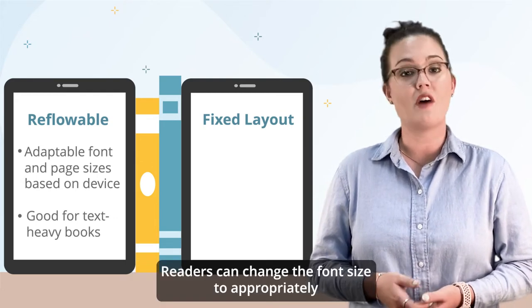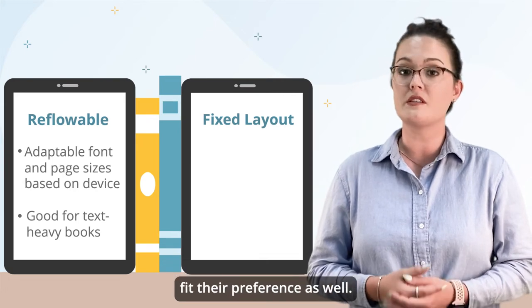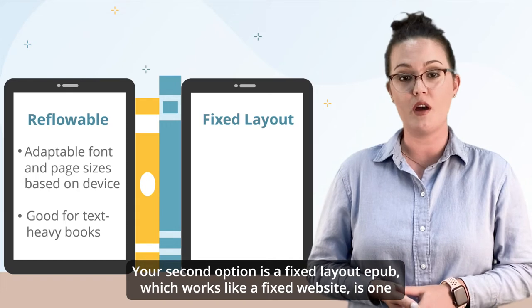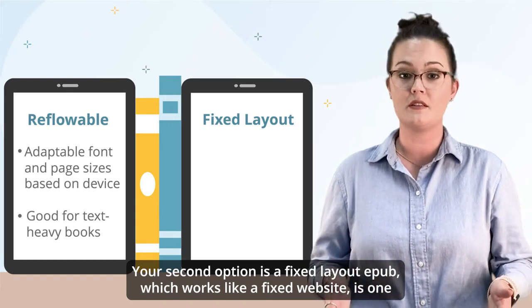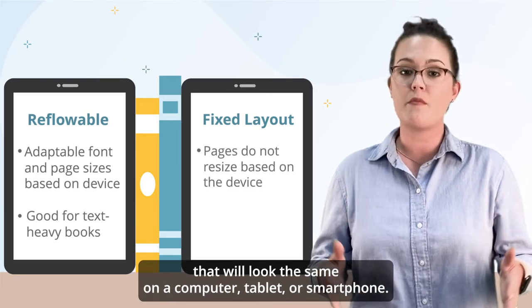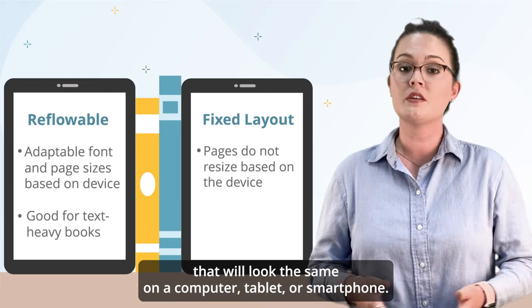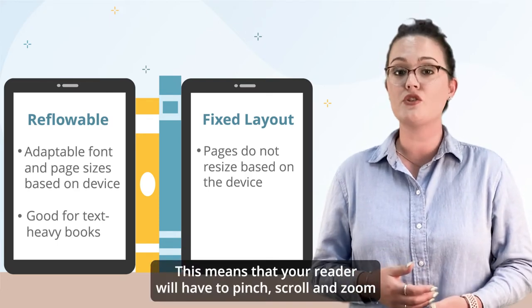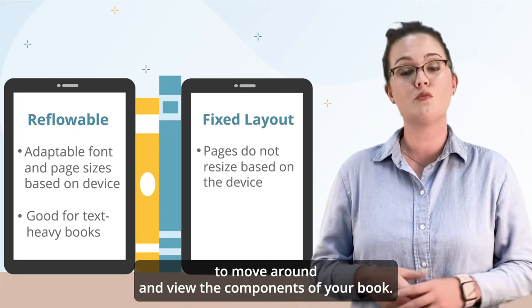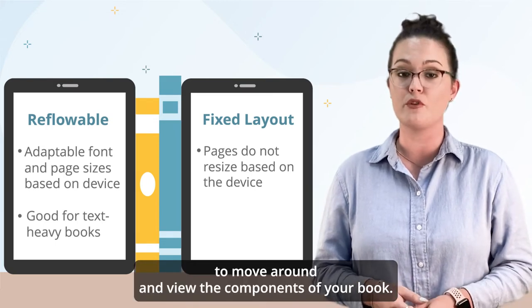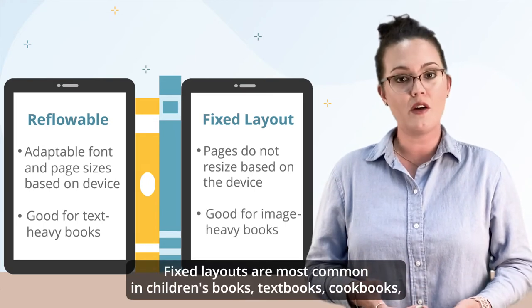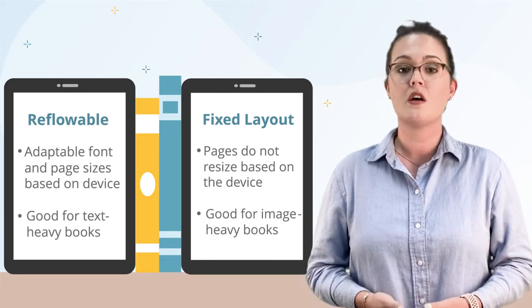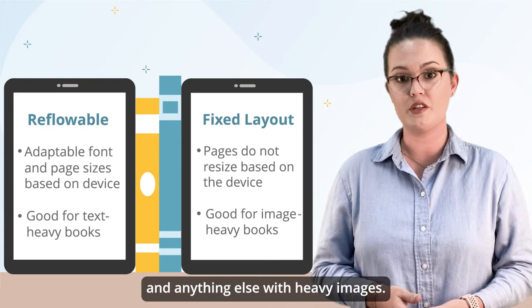Readers can change the font size to appropriately fit their preference as well. Your second option, a fixed layout EPUB, works like a fixed website — it will look the same on a computer, tablet, or smartphone. This means that your reader will have to pinch, scroll, and zoom to move around and view the components of your book. Fixed layouts are most common in children's books, textbooks, cookbooks, and anything else with heavy images.